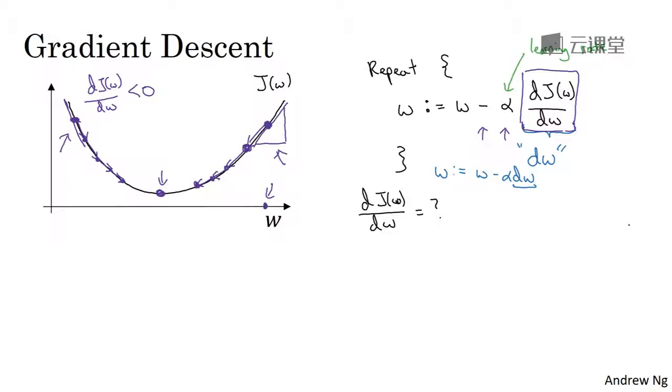If you have a deep knowledge of calculus, you might be able to have a deeper intuition about how neural networks work. But even if you're not that familiar with calculus in the next few videos, we'll give you enough intuitions about derivatives and about calculus that you'd be able to effectively use neural networks. But the overall intuition for now is that this term represents the slope of the function. And we want to know the slope of the function at the current setting of the parameters so that we can take these steps of steepest descent, so that we know what direction to step in in order to go downhill on the cost function j.